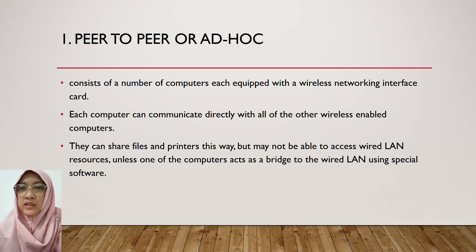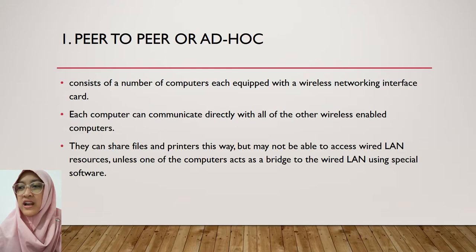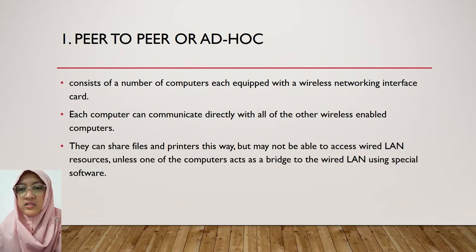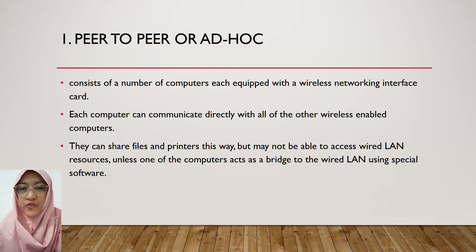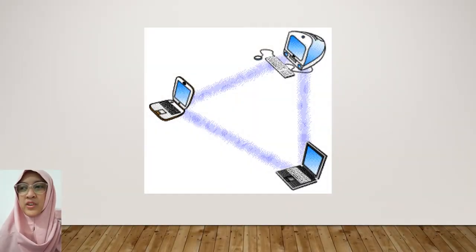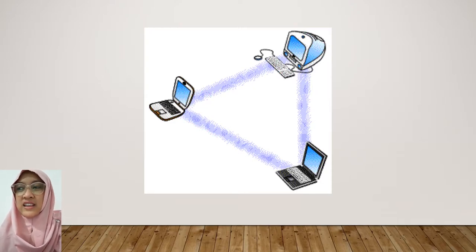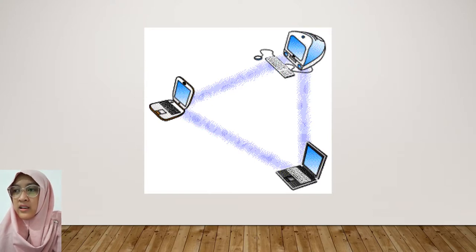First, peer-to-peer or ad-hoc: this consists of a number of computers each equipped with a wireless networking interface card. Each computer can communicate directly with all of the other wireless-enabled computers. They can share files and printers this way, but may not be able to access wired LAN resources unless one of the computers acts as a bridge to the wired LAN using special software. This is the picture of a peer-to-peer or ad-hoc wireless network — there are three computers and each makes a connection to the others, forming a triangle.